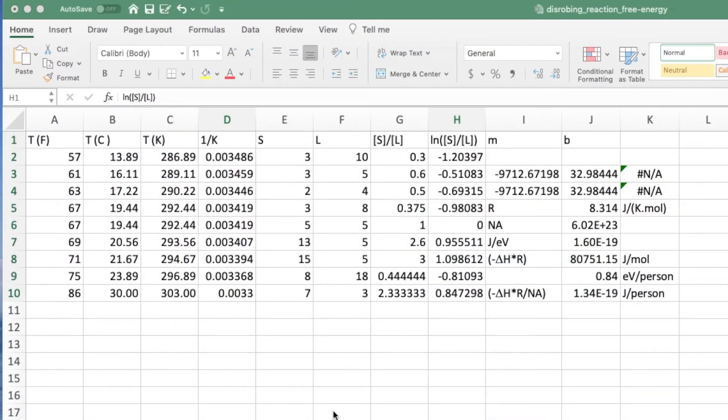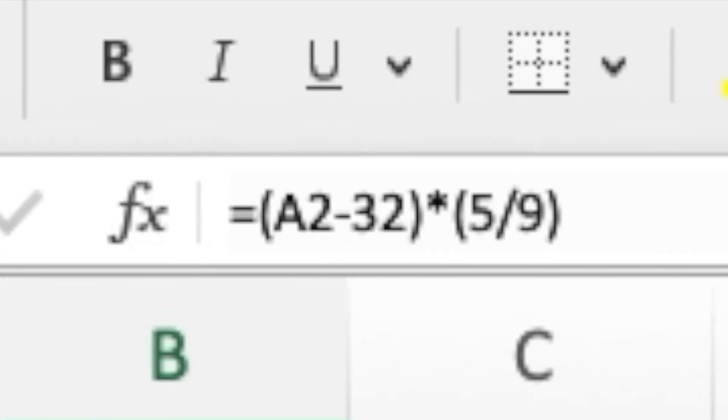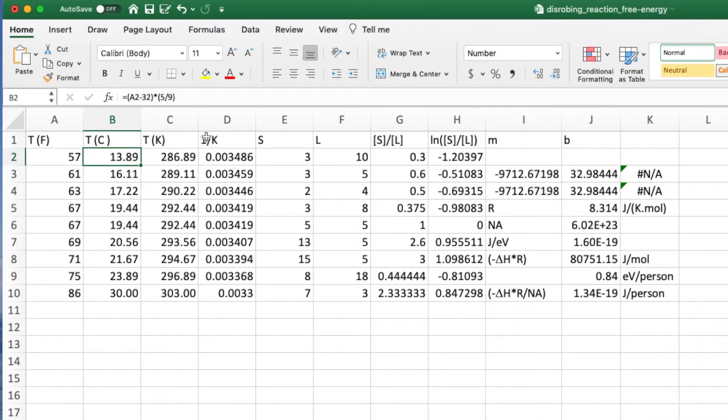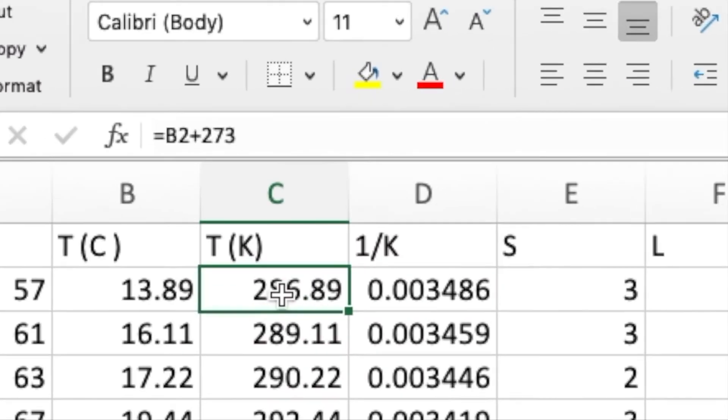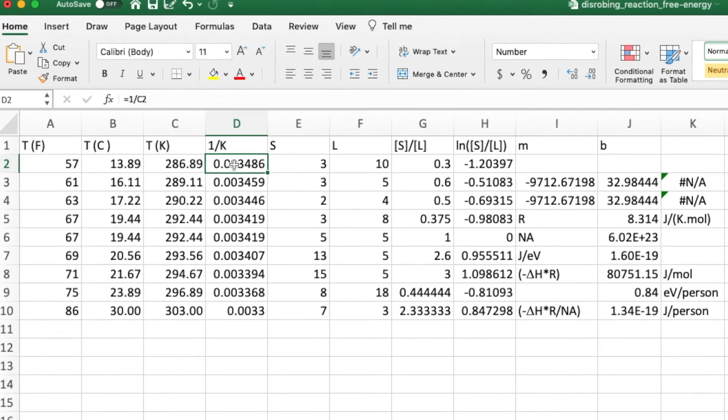If you didn't take data directly into a spreadsheet, you'll want to enter it into one now. Start by entering each temperature for which you have data into a column. I've done that in column A here. This data is in degrees Fahrenheit. Next, I created a column to convert the temperature into degrees C. I've done that in column B. If I click cell B2, you can see the conversion formula. Next, I used column C to convert the data to degrees K. Clicking on cell C2 shows the conversion. Column D computes one over temperature. Clicking on cell D2 shows the conversion.